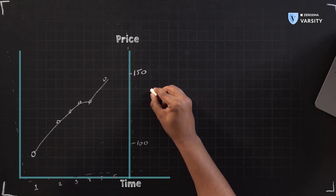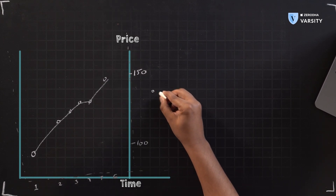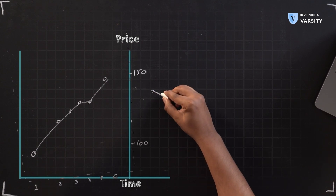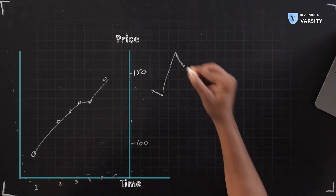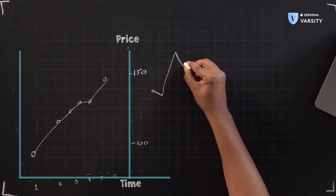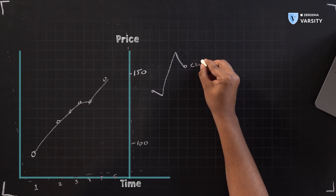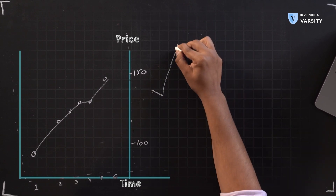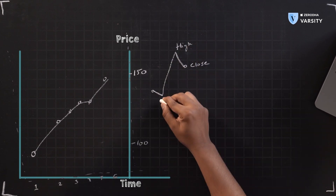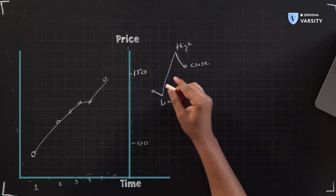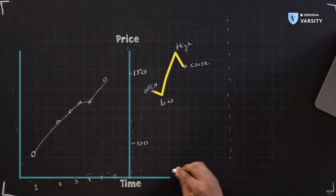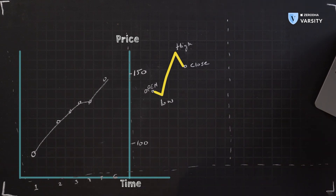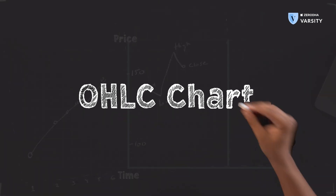Let's say the market opened here, went lower than that, made a high, and then closed at 150. So as you can see, we have the close, the high of the day, the low of the day, and the open. To capture all this, we can use something called an OHLC chart.